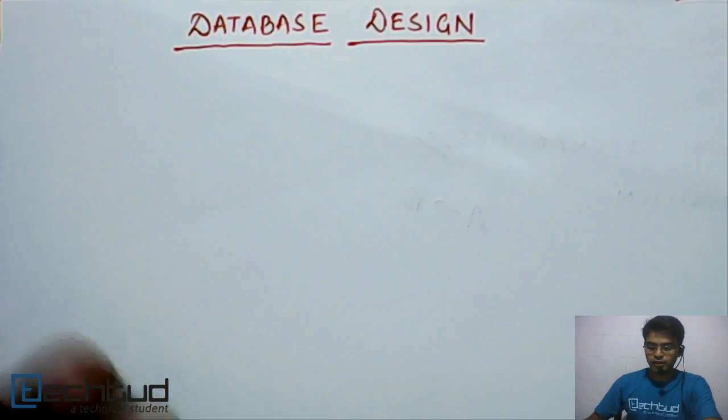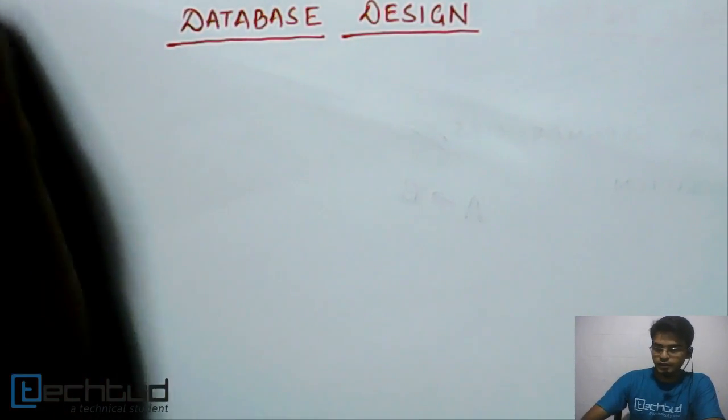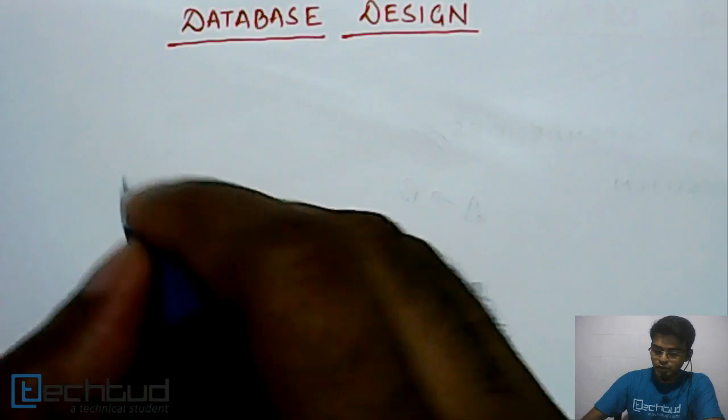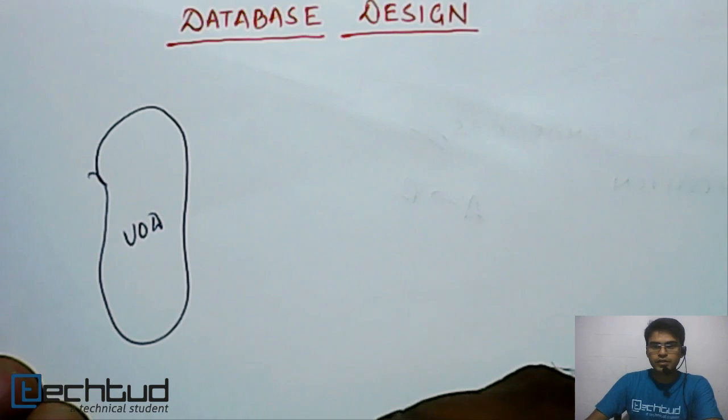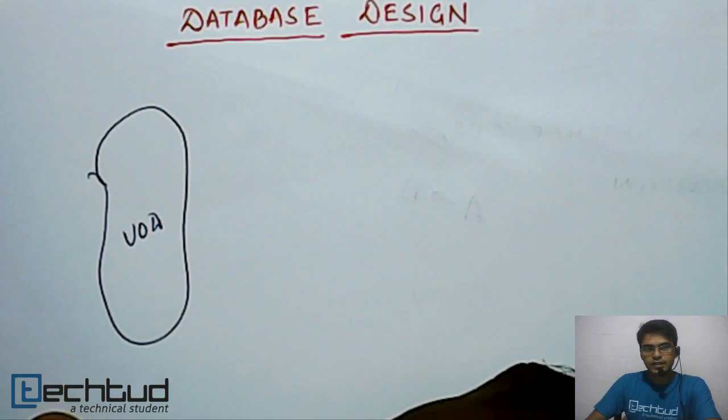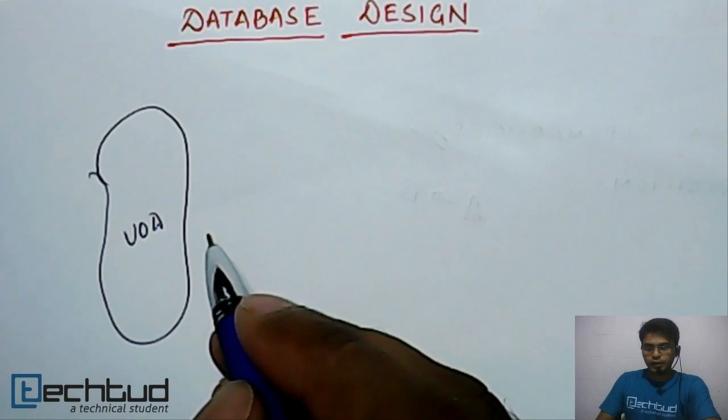First of all, we have to understand our progress. Till now, we had a given universe of discourse, which was basically the given scenario from which you have to design a database system. You have to model this relational database system for the given requirements.